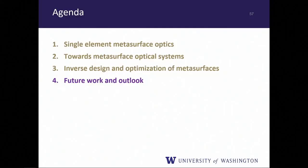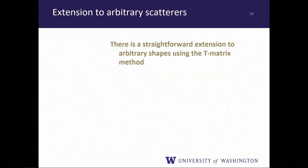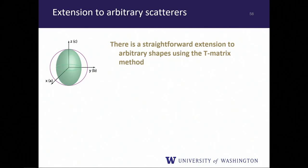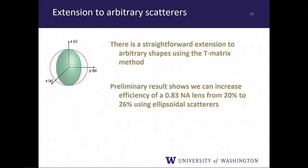For future work, we can extend this method to arbitrary shapes using the T-matrix method, originally developed for astrophysics to study space dust and aerosol particles. We have implemented this in code and have preliminary (not yet publishable) results showing that we can increase the focusing efficiency of a lens with numerical aperture ~0.83 from 20% using spheres to 26% using ellipsoidal scatterers. In this case the optimization started from an existing lens design and was improved using the T-matrix approach.